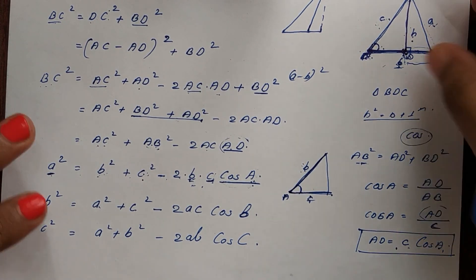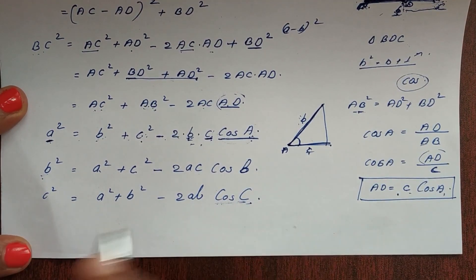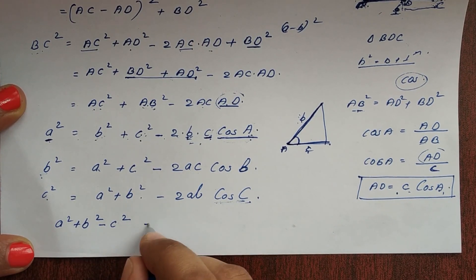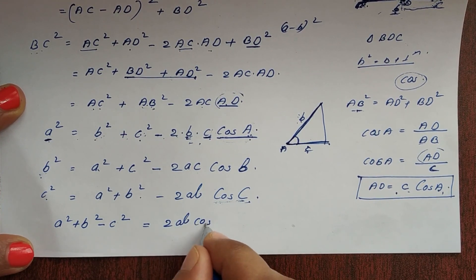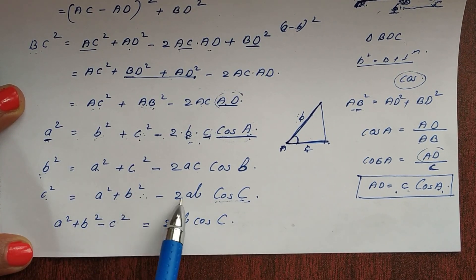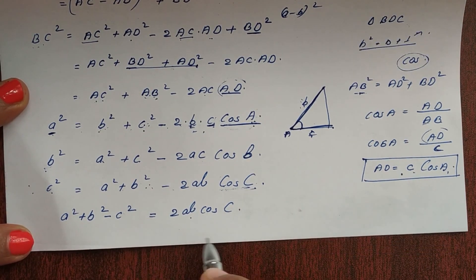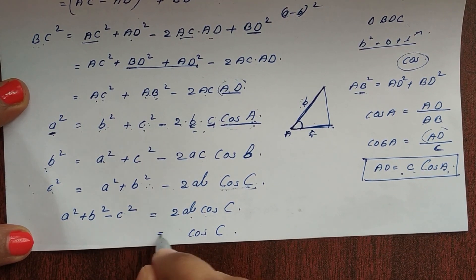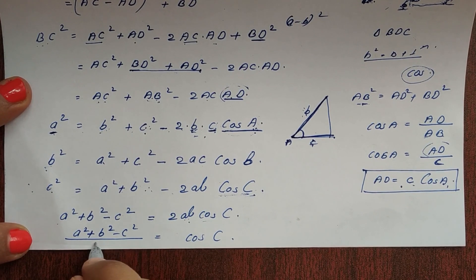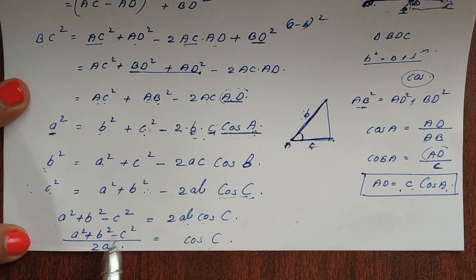We can also rearrange to find the cosine of each angle. For example, cosC = (a² + b² − c²) / 2ab. Similarly, cosB = (a² + c² − b²) / 2ac, and cosA = (b² + c² − a²) / 2bc.